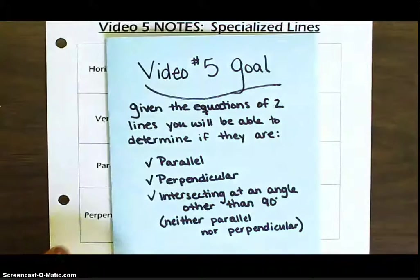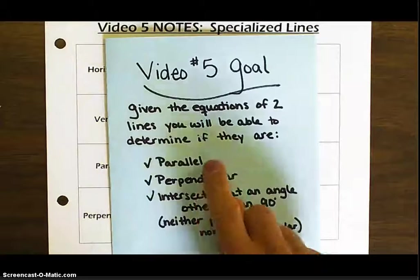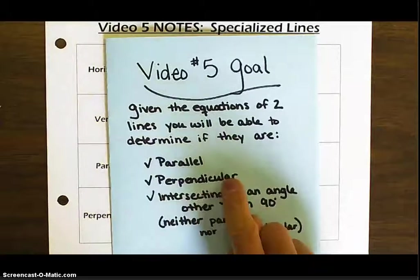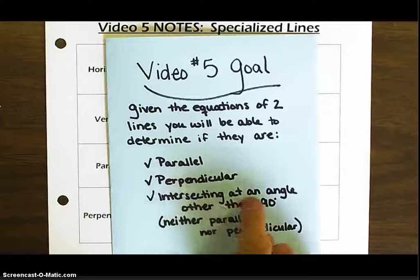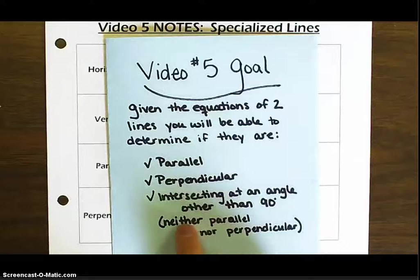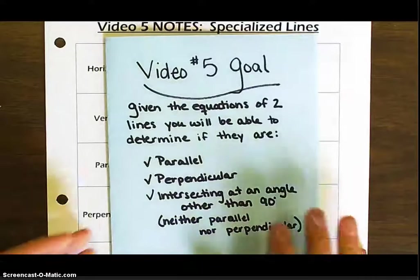Welcome back. We've got video number five. Today, our goal of the day: given the equations of two lines, you will be able to determine if they are parallel, perpendicular, or if the lines are going to intersect at an angle other than 90 degrees, which means they're neither parallel nor perpendicular. So, let's go ahead and take a look.